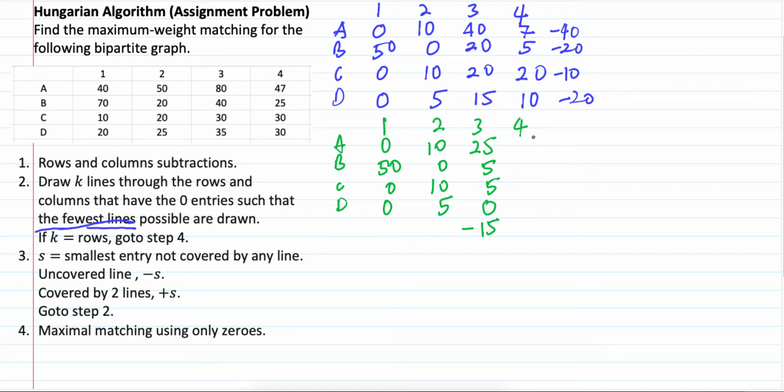Right? In here, no 0. The smallest one is 5. So, minus 5. 7 minus 5, 2. 5 minus 5, 0. 20 minus 5, 15. 10 minus 5, 5.